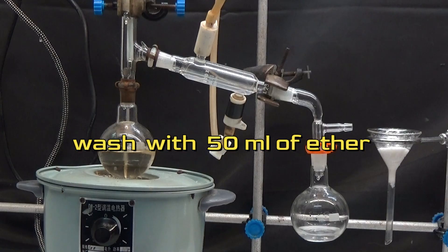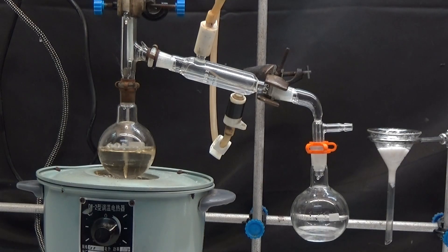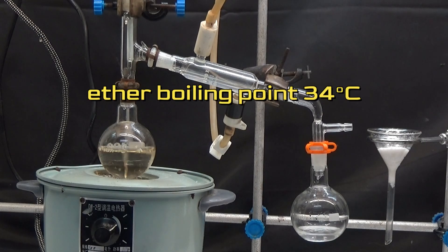The filtered product is distilled. First, the ether is distilled at 34 degrees, and once the ether is distilled, the vacuum is connected and the ester is distilled.